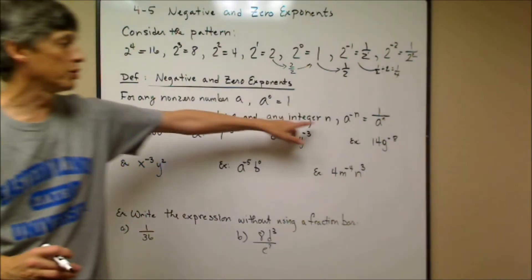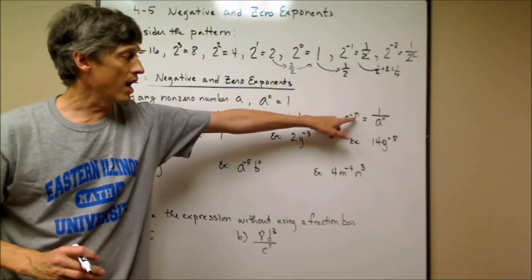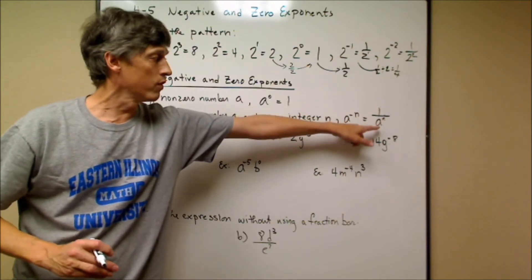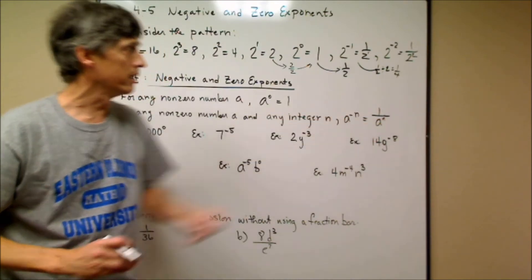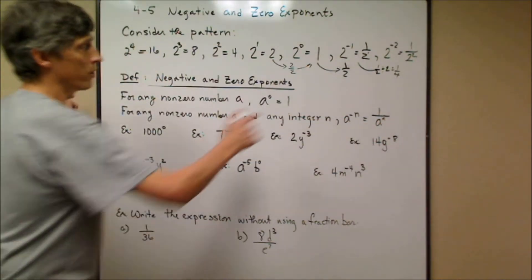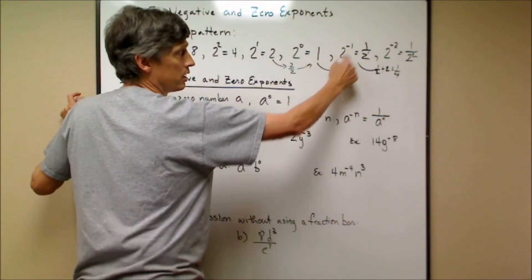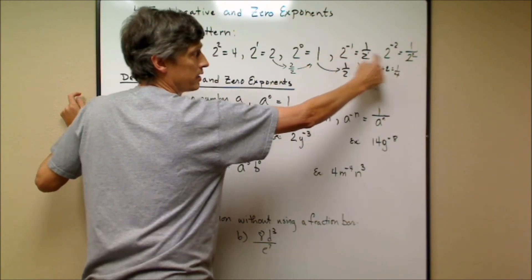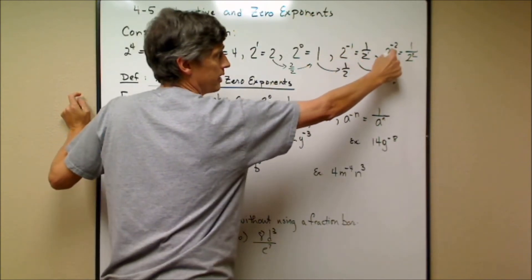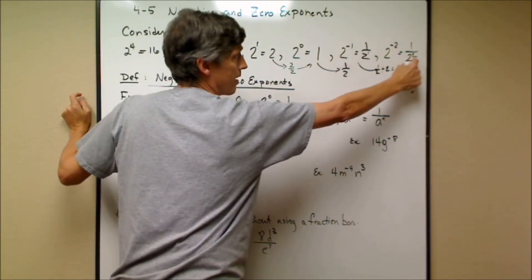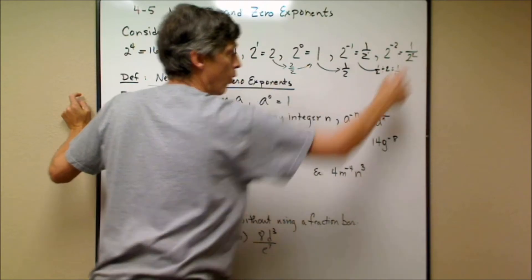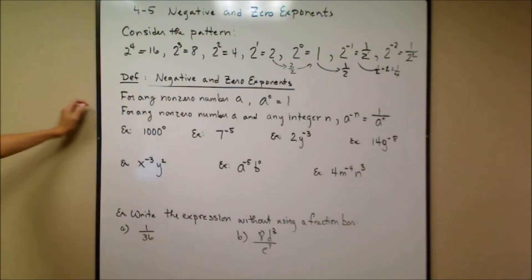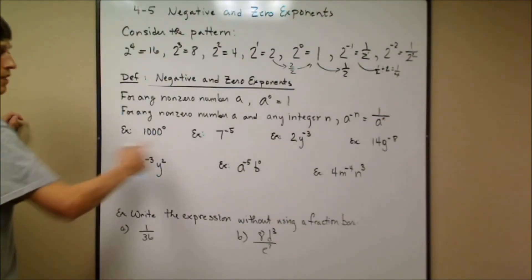For any non-zero number a and any integer n, a to the negative n equals 1 over a to the n. That's what was going on in the pattern: negative 1 exponent pairs with positive 1 by putting the expression over 1, and negative 2 pairs with positive 2.